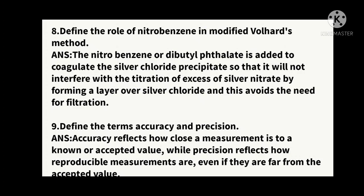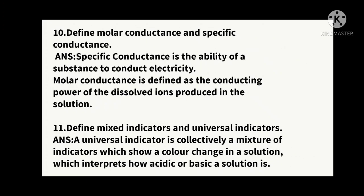Ninth question: define accuracy and precision. Accuracy means how close a measurement is to the known or accepted value. Precision is the reproducibility of exact values, even if they are far from the acceptable value — for example, values of 5, 10, 15, 20 that are reproducible.